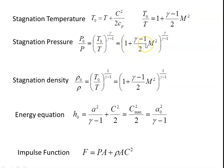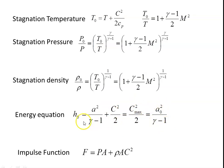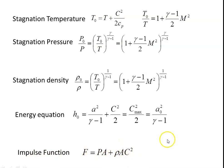Substituting T₀/T in terms of Mach number: P₀/P = [1 + (γ-1)/2 · M²]^(γ/(γ-1)). The stagnation density: ρ₀/ρ = (T₀/T)^(1/(γ-1)) = [1 + (γ-1)/2 · M²]^(1/(γ-1)). The energy equation: H₀ = A²/(γ-1) + C²/2 = C_max²/2 = A₀²/(γ-1). Using any of these equations we can calculate the stagnation enthalpy. The impulse function F = PA + ρAC², the sum of pressure force and inertia force.